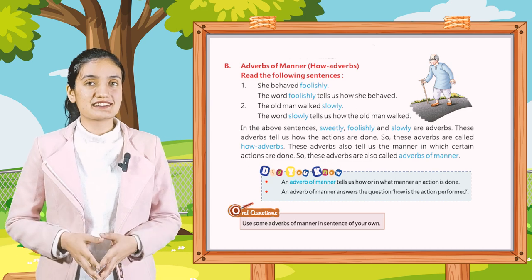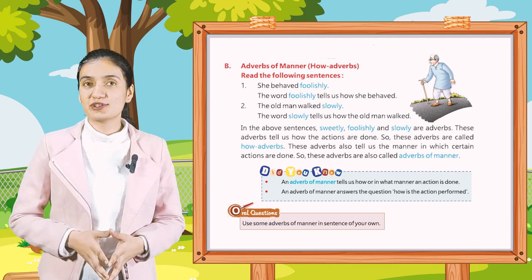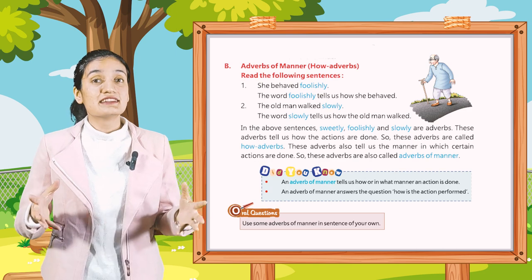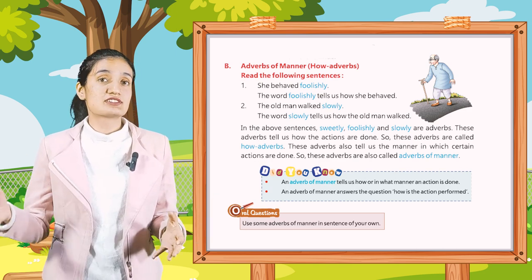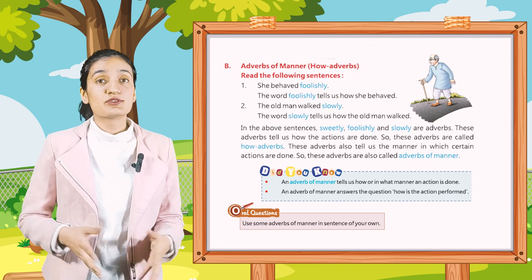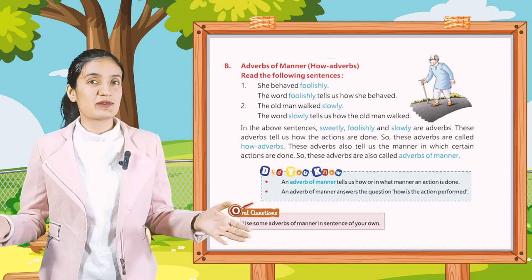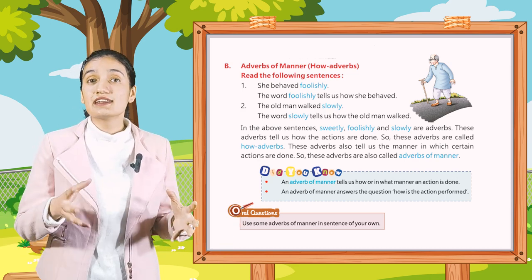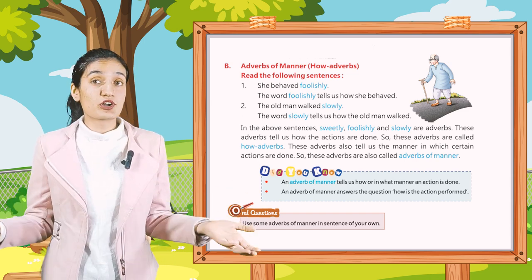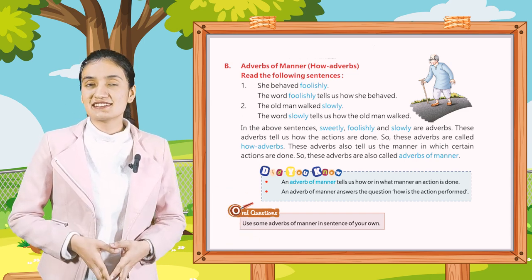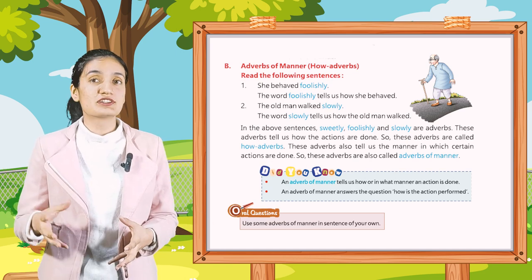These adverbs tell us how the actions are done, so they are called 'how adverbs'. They also tell us the manner in which certain actions are done, so they are also called adverbs of manner. An adverb of manner tells how or in what manner an action is done. An adverb of manner answers the question: how is the action performed?